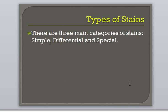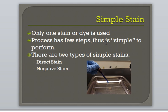There are three main categories for staining: simple, differential, and special stains. In a simple stain, only one stain is used, the process has few steps, and doesn't require much time. Therefore, it's simple compared to other staining methods. There are two types of simple staining techniques: direct stain and negative stain.